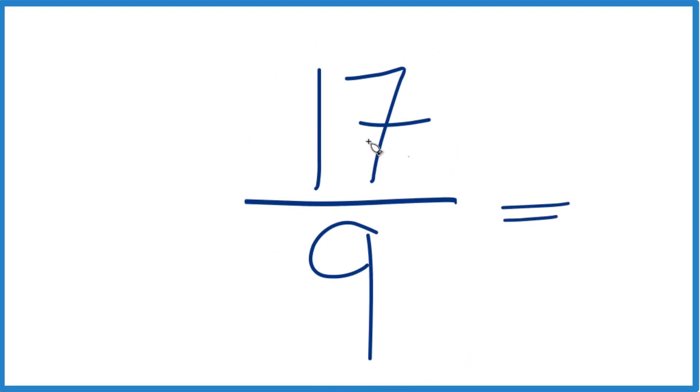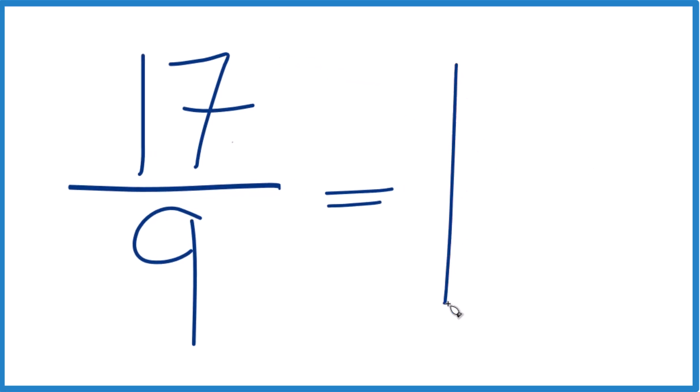9 goes into 17. 2 times 9 is 18, so that doesn't work. But 1 times 9, that's 9 with 8 left over. 9 plus 8 is 17. And then we just keep the 9 the same.